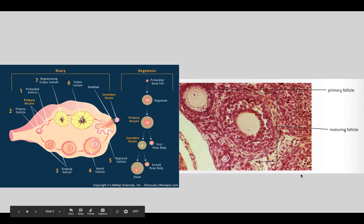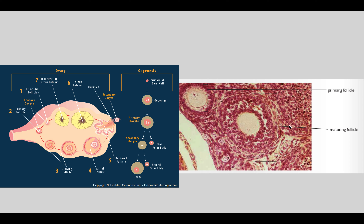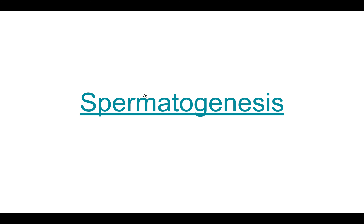When you're born, you have many follicles containing primary oocytes. Imagine inside your ovaries you see small dots — those are all follicles. When you reach puberty, a group of them become large each month. The one that becomes the largest becomes your secondary oocyte that gets ovulated. The rest that don't become large just stay as follicles inside the ovaries.